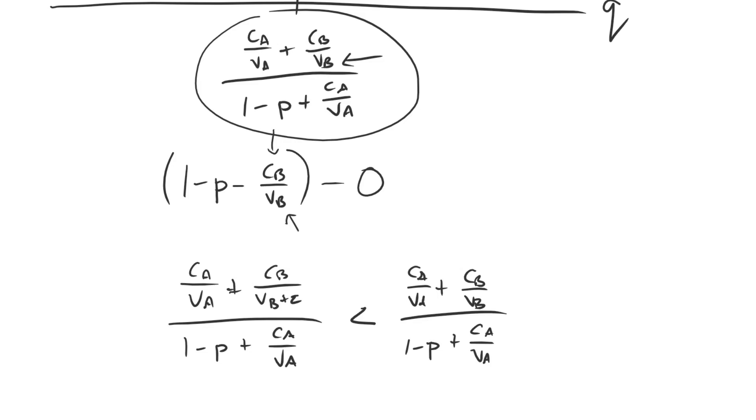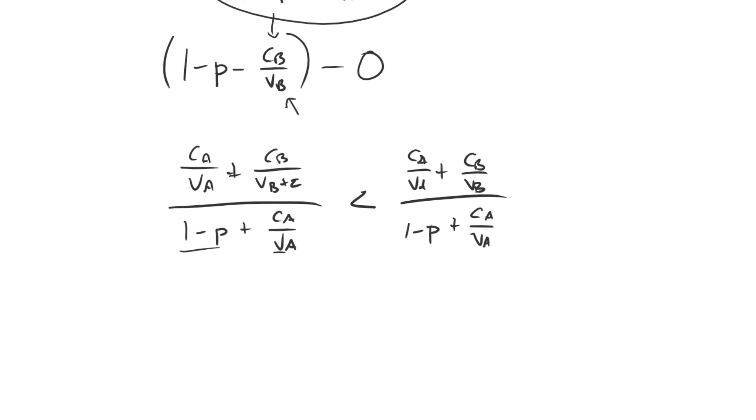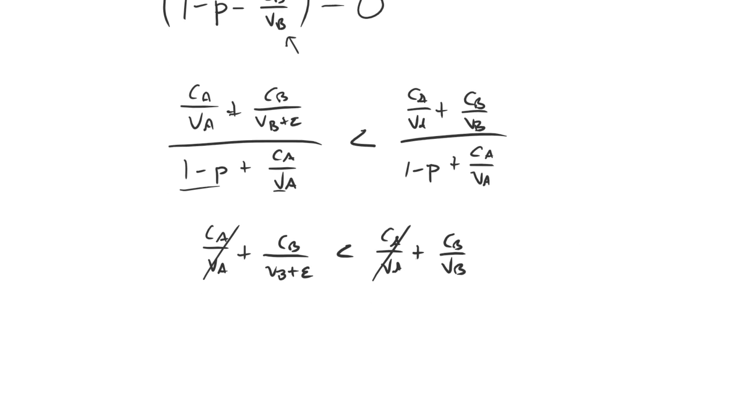We can begin by multiplying off both of the denominators. It's the exact same value on both sides. And moreover, we don't have to worry about flipping the inequality because both of those things are positive. 1 minus P has to be at least 0 if not larger. And of course, CA over VA, those are positive values as well. So if we do that, then we're just looking at what's up top. So we have CA over VA plus CB over VB plus epsilon less than CA over VA plus CB over VB. Well, now it's clear that we have the CA and VA on both sides. So we can get rid of those, which leaves us with just CB over VB plus epsilon less than CB over VB.